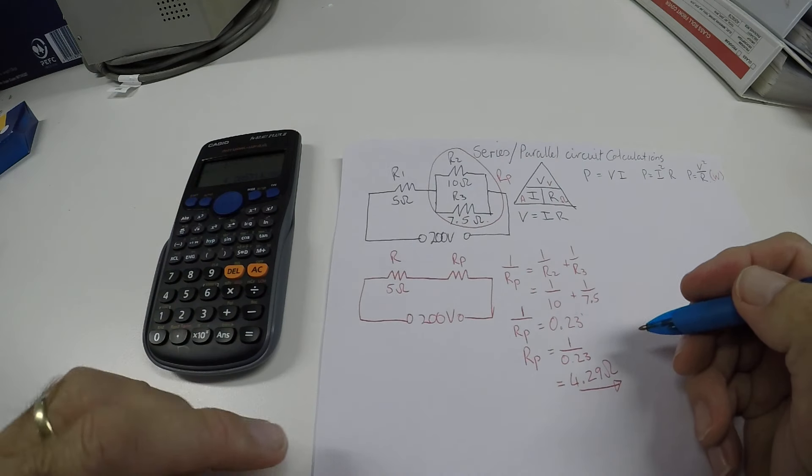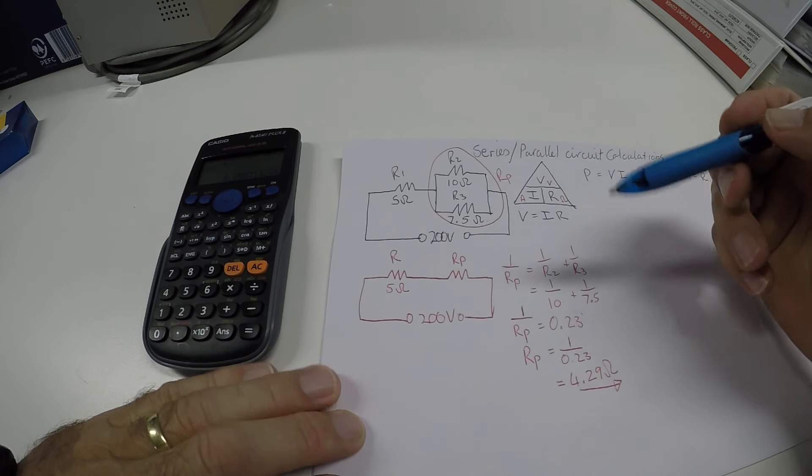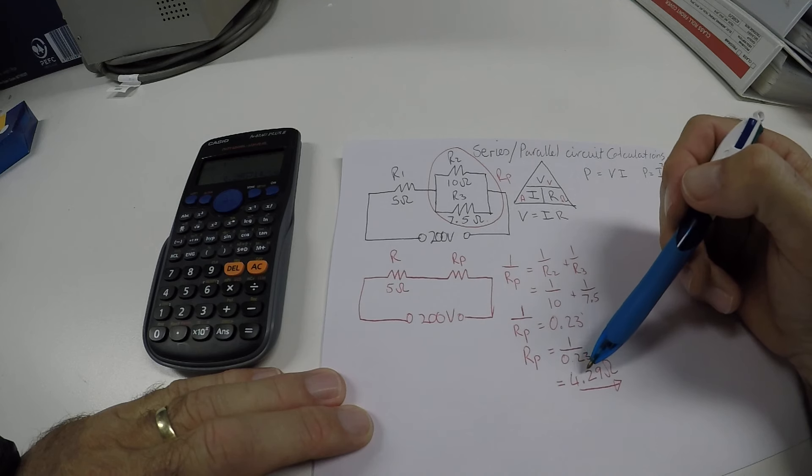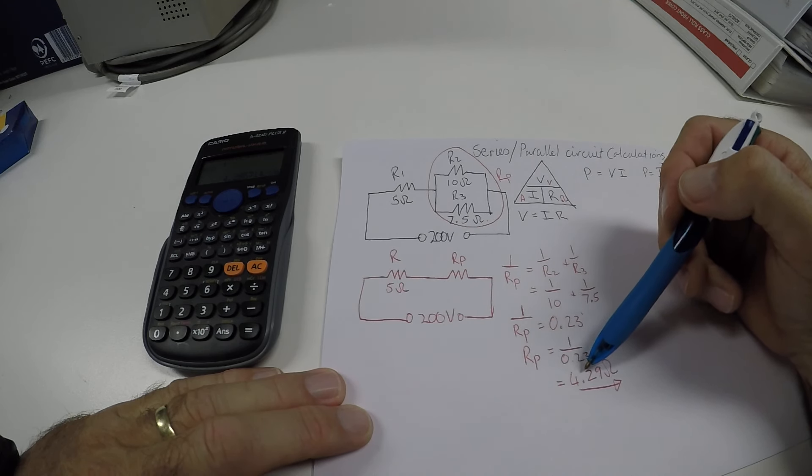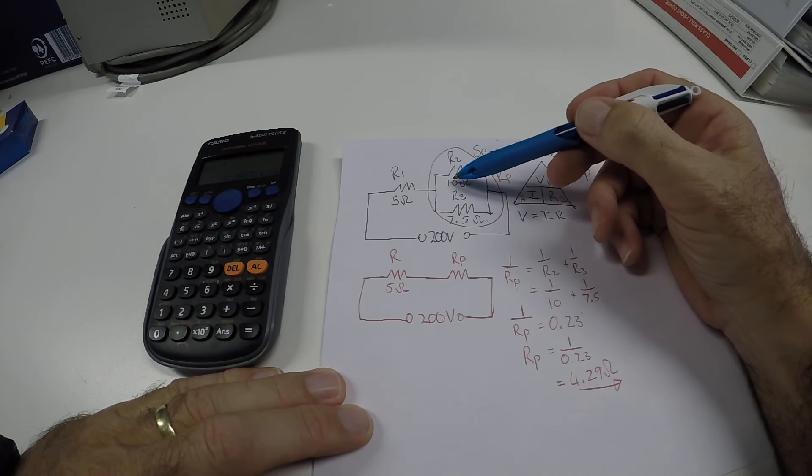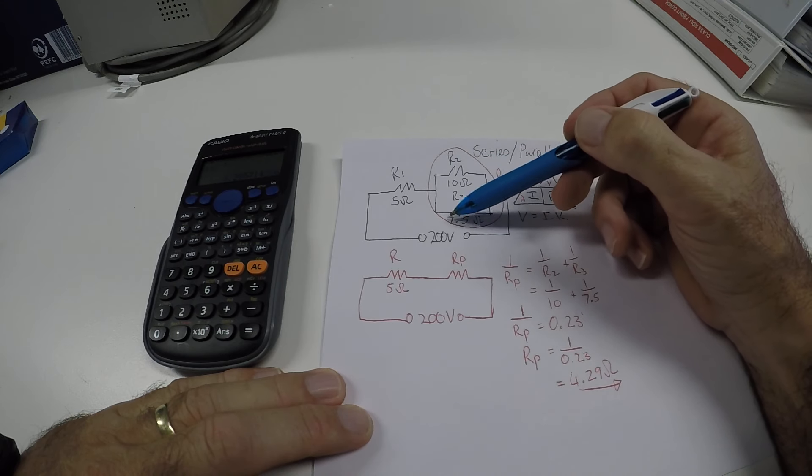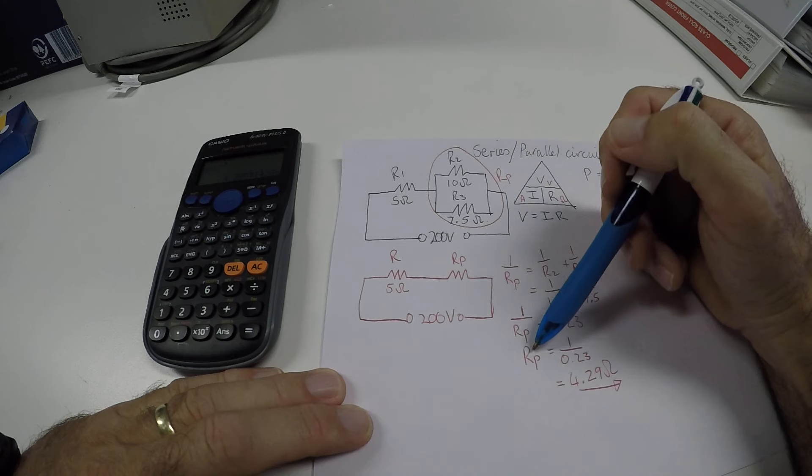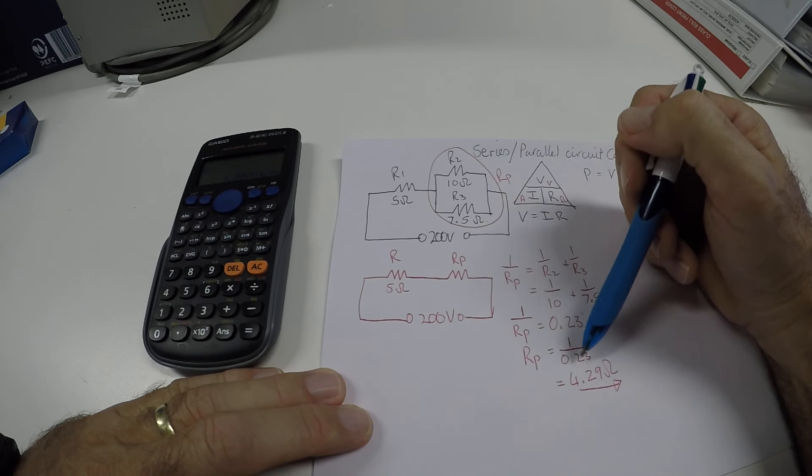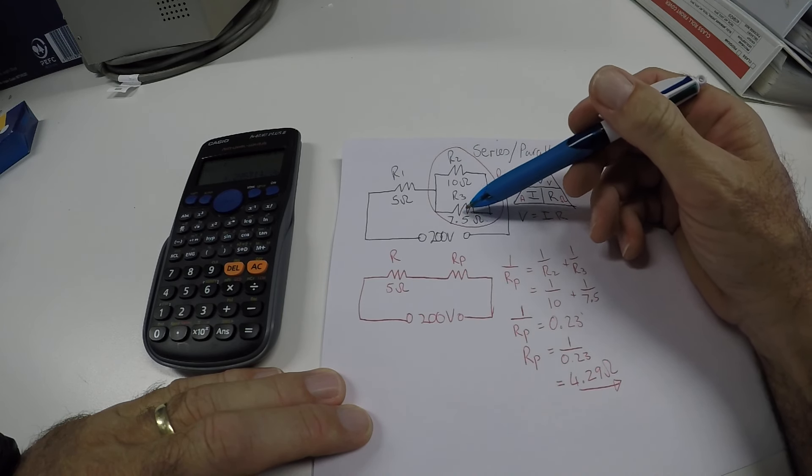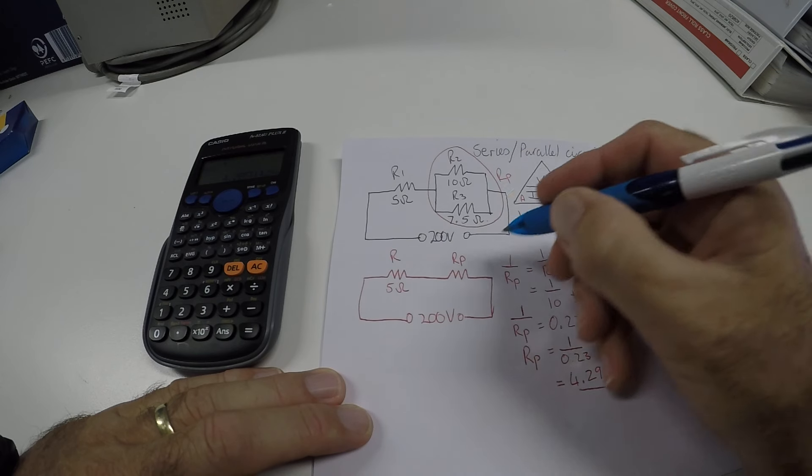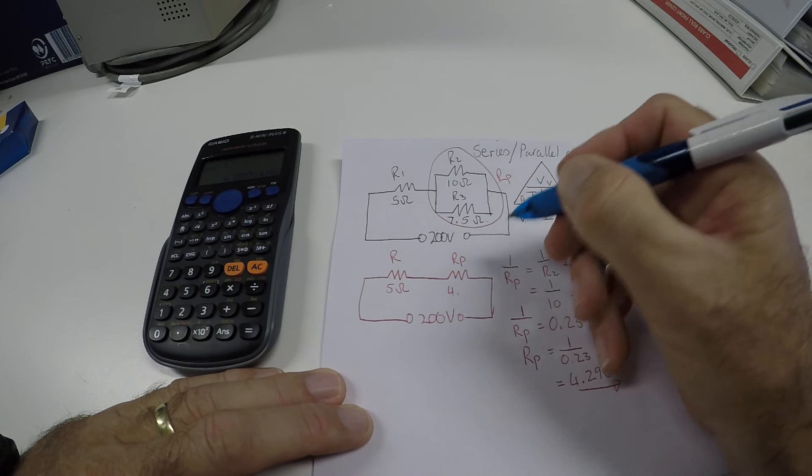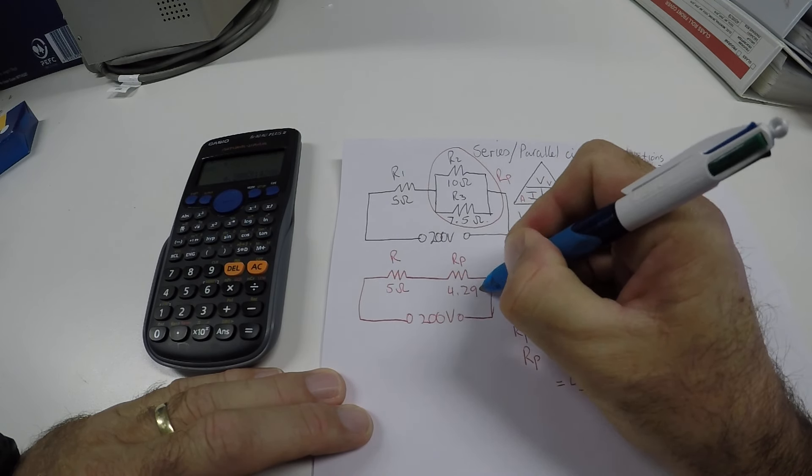Now remember, I can check my answer to make sure if it is right by looking at the value. So resistance parallel I got is 4.29. In my parallel circuit, the 7.5 ohms is the smallest. So the rule is that the total for the parallel needs to be less than the smallest resistor. Which in this case it is. So we can see that it is 4.29 ohms.